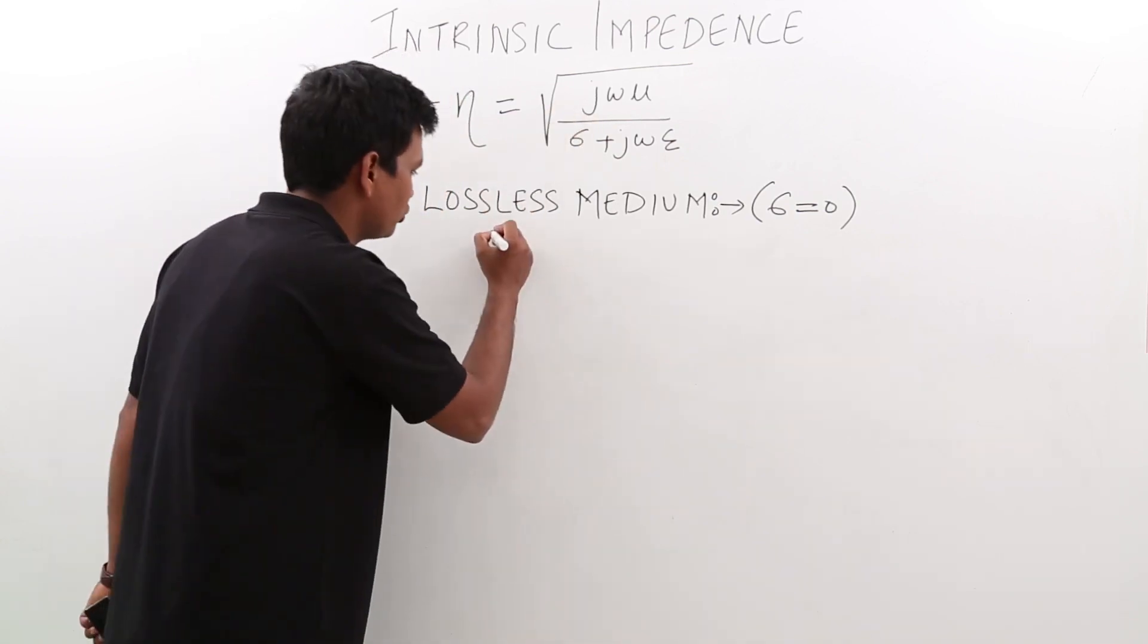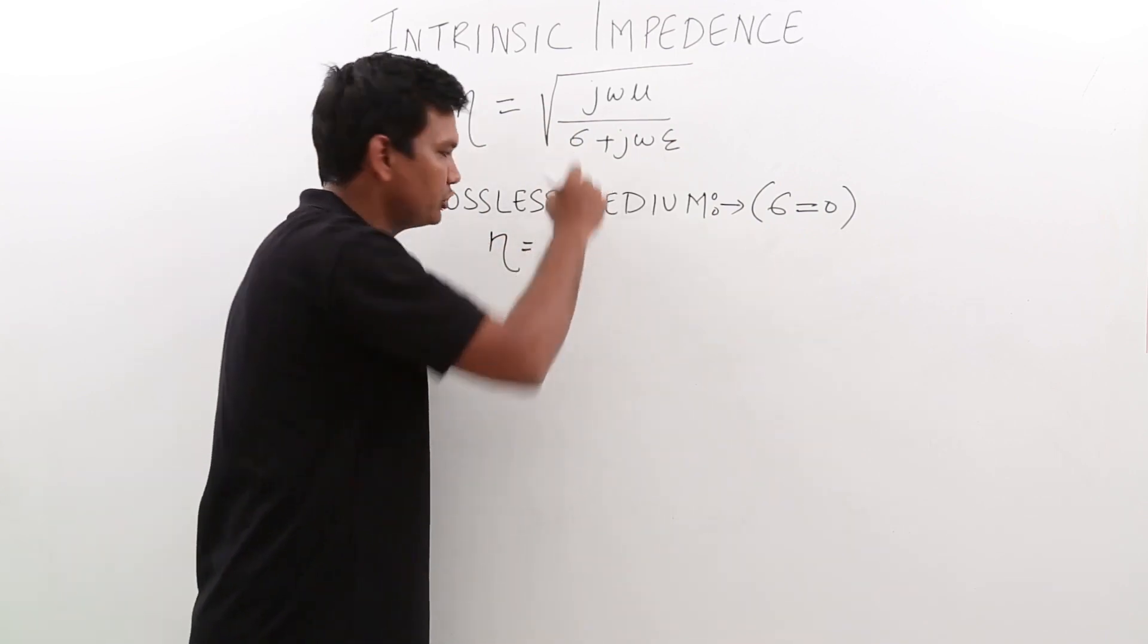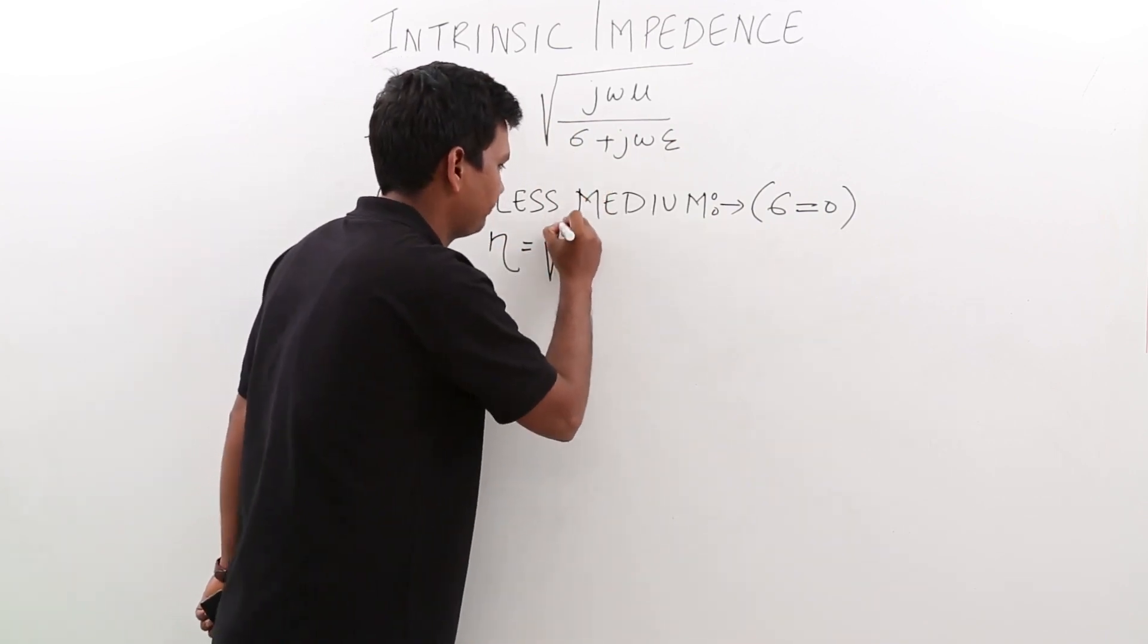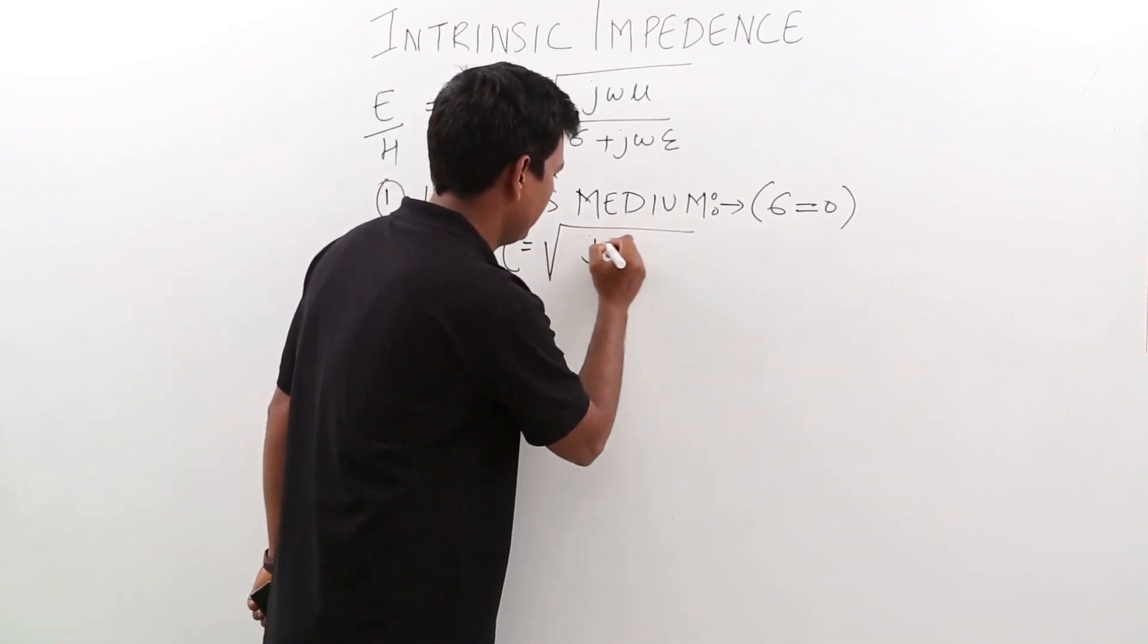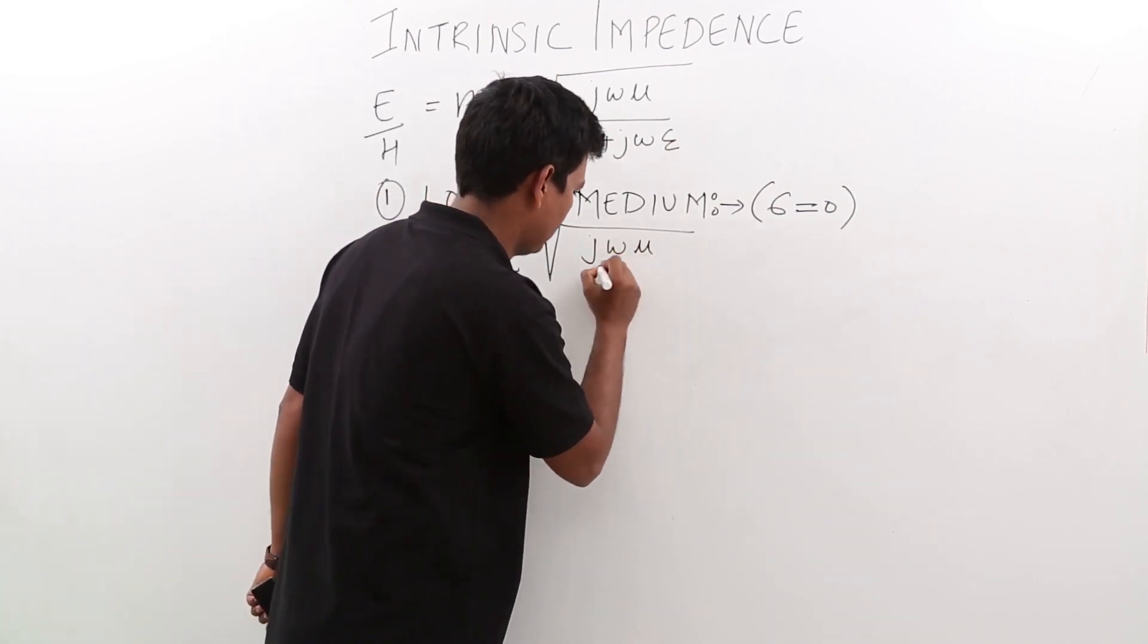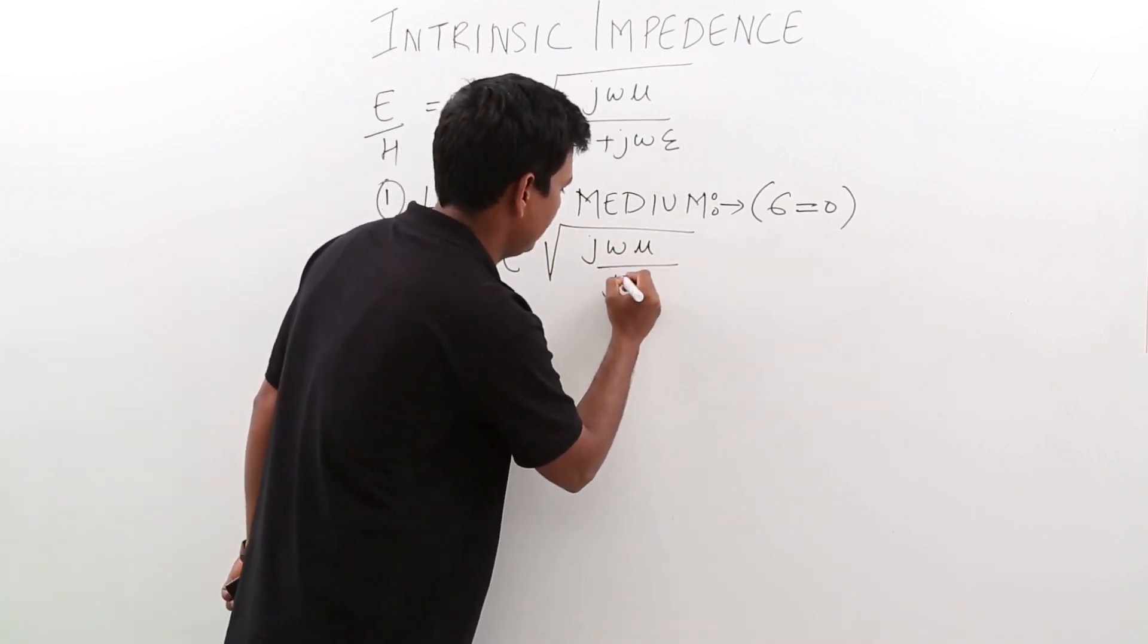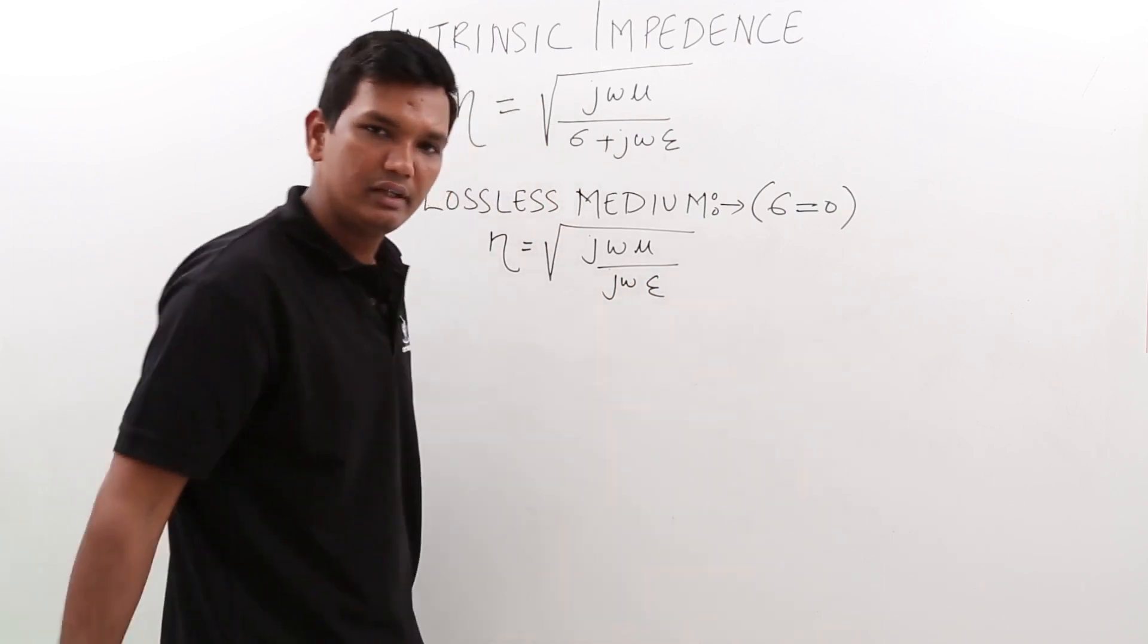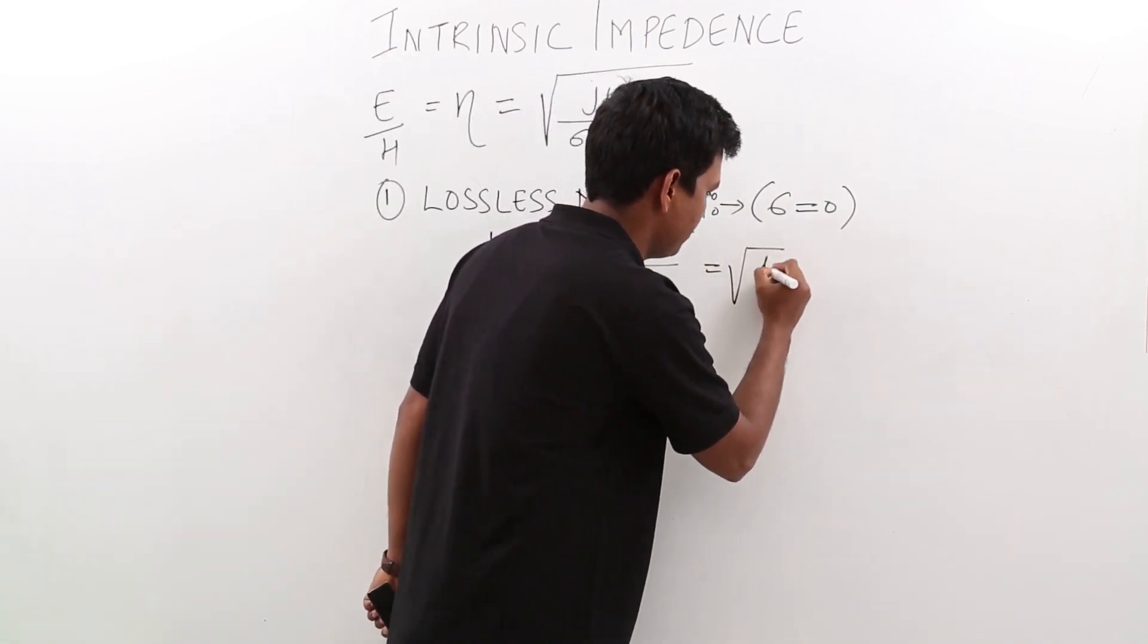Let us substitute this. My eta in this case, when sigma goes to zero, this quantity becomes j omega mu by j omega epsilon. I can simplify this; it becomes mu by epsilon.